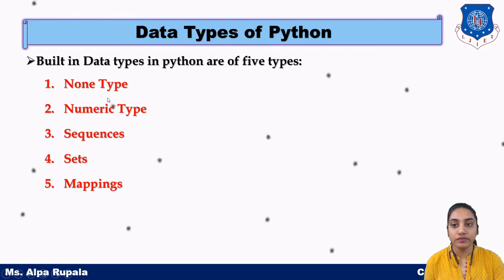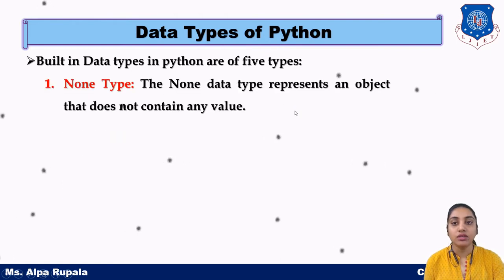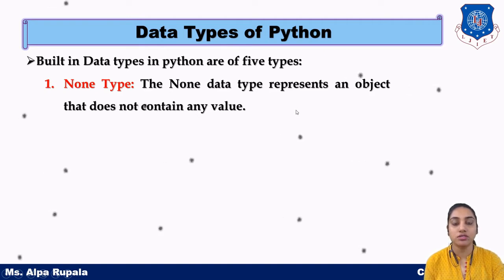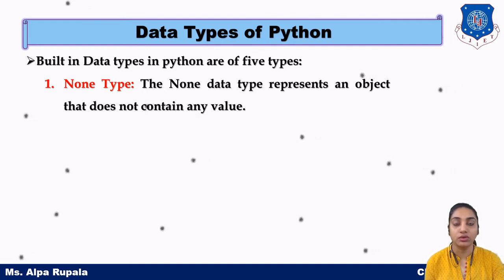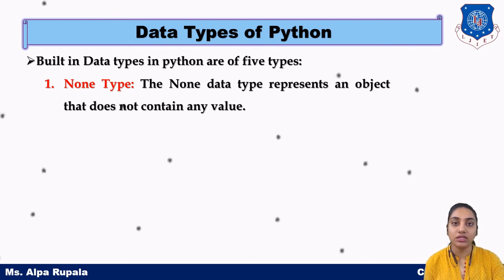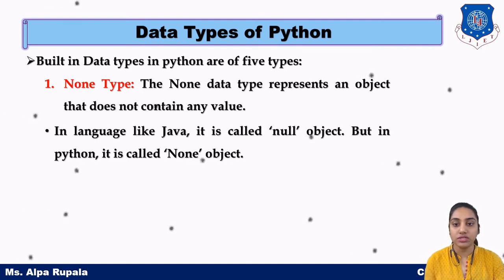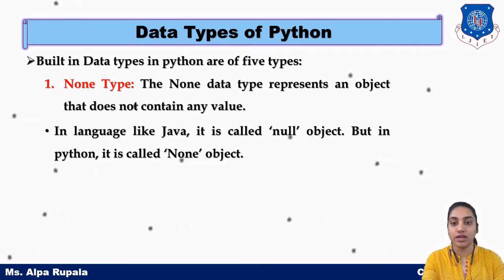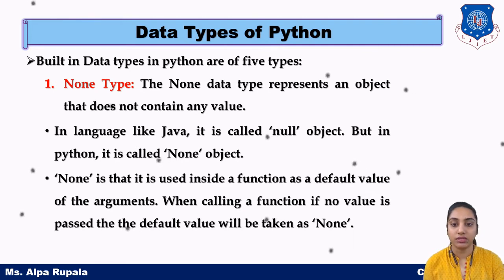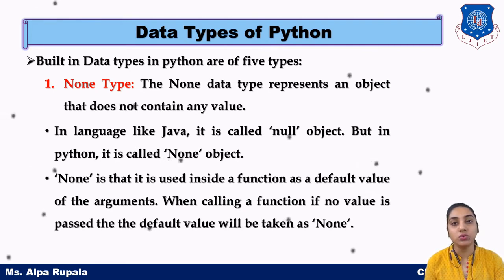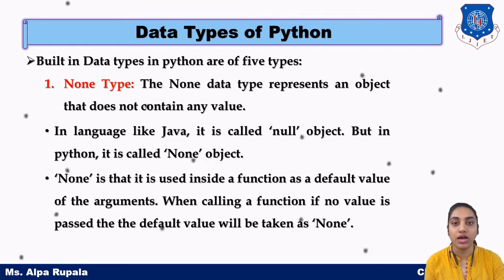Starting with the first one, that is None type. The None type data type is a kind of type which does not have any value. It does not contain zero. If we are comparing the None variable, then it will only be compared by None itself. Basically in Java we have the null object; similarly, we have the None object in Python.